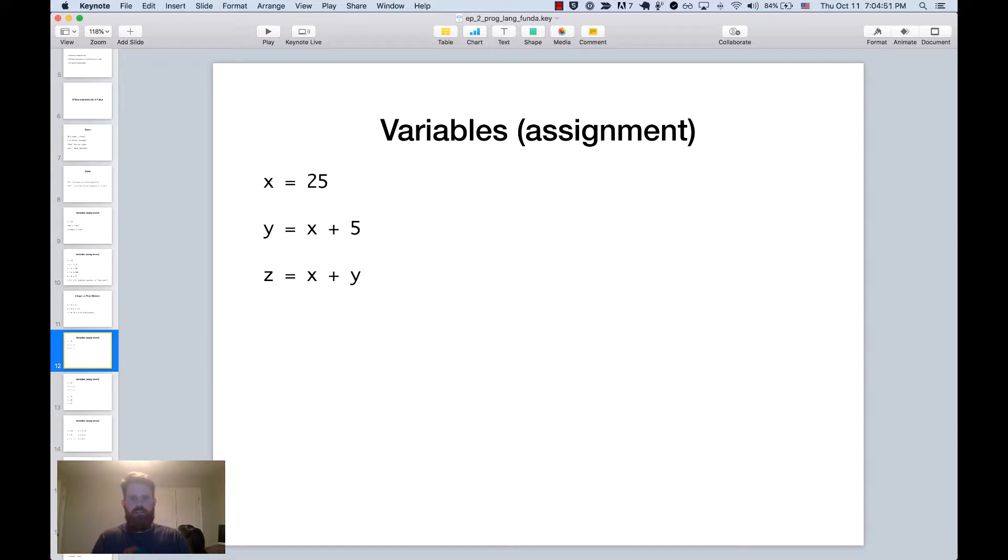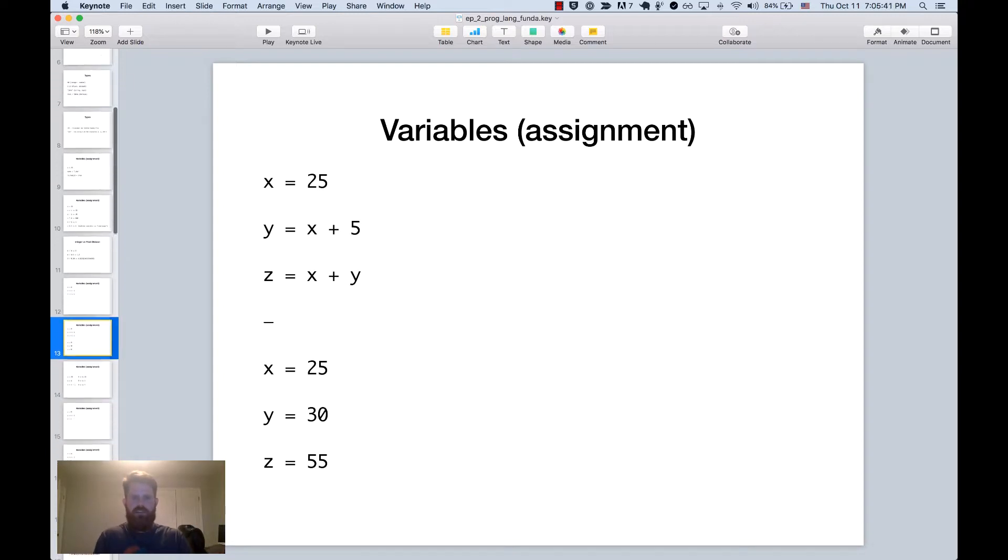Okay, so here's a simple assignment problem. You can actually assign variables using other variables, which is very handy. So in this example, we set x equal to 25. Then we create a variable called y, and its value is x plus 5. And then finally, we create a variable called z, and its value is x plus our variable y. So what do you think the values of x, y, and z would be here? And you can pause your video if you'd like to. And so let's check ourselves. So x is 25, as we see from the first line. Y is equal to 30. So the value of x is 25 plus 5. And then z is equal to x plus y. So 25 plus 30 is 55. So hopefully that was intuitive, and makes sense for you. We'll do one more that's a little more complicated.